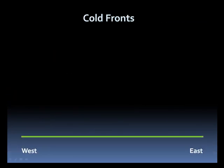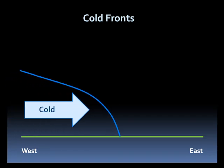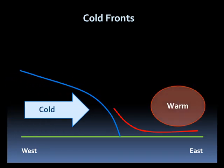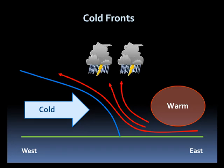Let's look at cold fronts in the horizontal. Here we have a cold front advancing from the west into a warmer air mass to the east. The dome of cold, dense air causes the warm air to rise above it. This rising motion can lead to clouds and possibly precipitation.